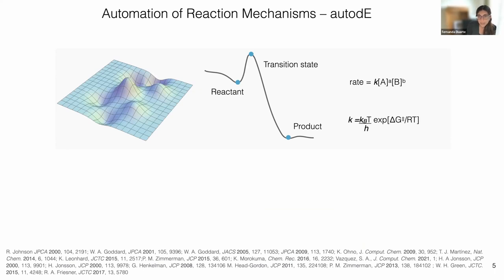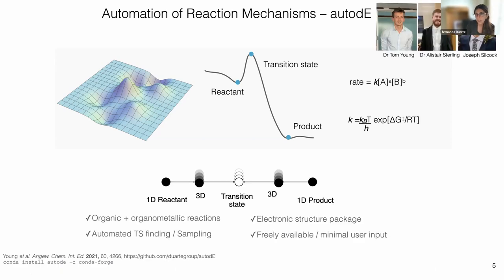The first work we have done is related to automation — how we can automate reaction pathway search. What we try to do is identify transition states and connect them to reactants and products, sometimes in one step, sometimes in many different steps. Many people have tried to do that over the years. What we have tried to do — Tom, Alistair, and Joe have led this work — is automate reaction pathways, aiming to provide the system with a 1D representation, for example a SMILES representation, and from that accurately compute conformations at the reactant state and the transition state.